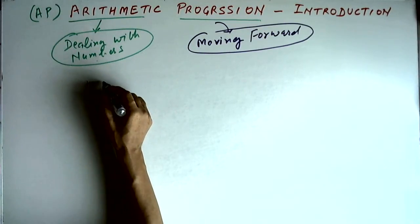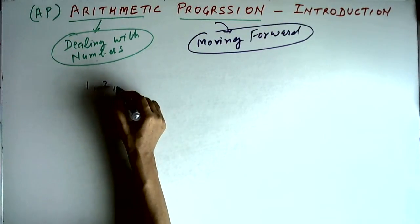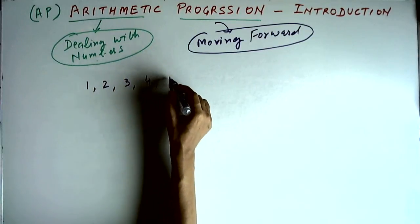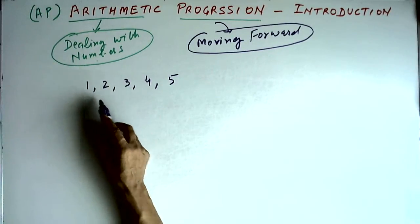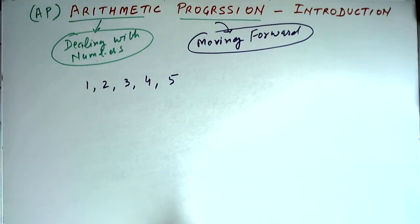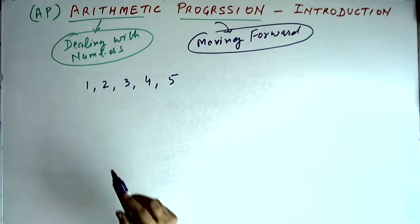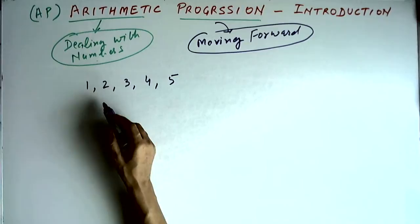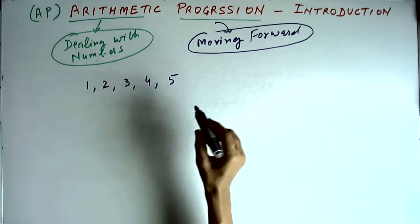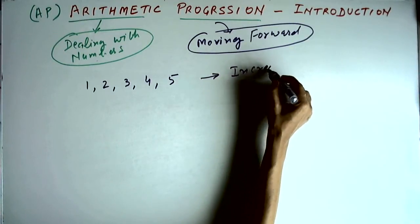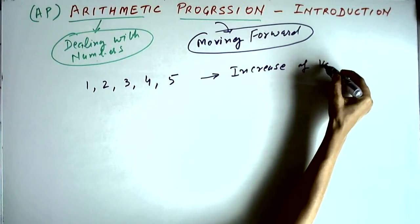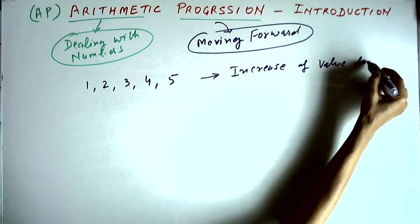For example, we say 1, 2, 3, 4, 5. This is basic counting which you have learned in nursery. Here the numbers are going forward in a pattern, and what is that pattern? Every consecutive, every successive number is increased by 1 — there is an increase in value by 1.